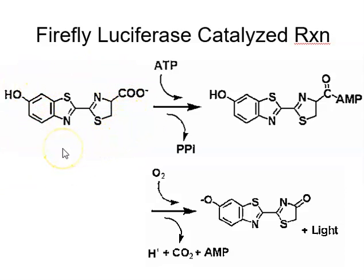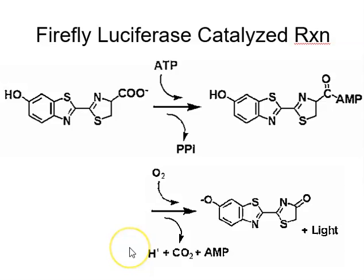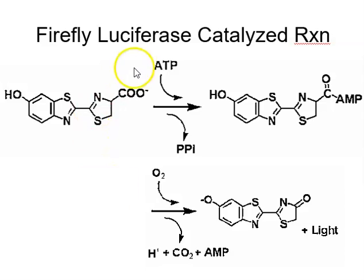This is the firefly luciferase-catalysed reaction. Luciferin is the substrate for luciferase; it creates an intermediate which breaks down to a final end product, resulting in the emission of light. Pause the video and think about what factors could be put into this reaction to alter the rate — and therefore the level of light given out. What is going to limit the rate of this reaction? Things like luciferin concentration, ATP availability, and oxygen levels all play a role.